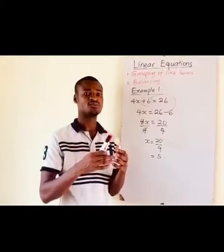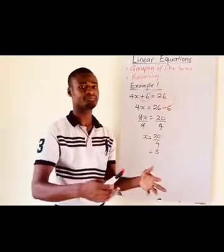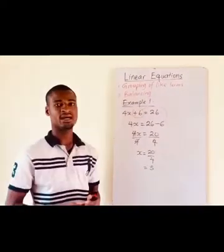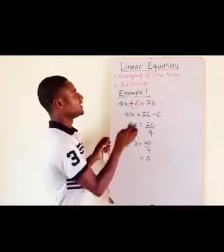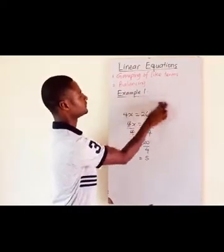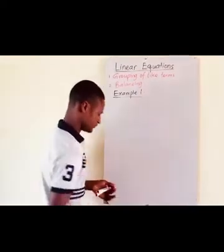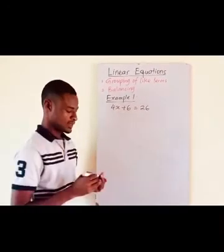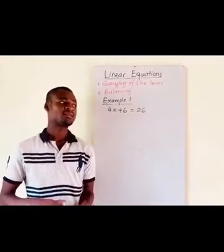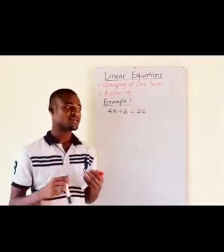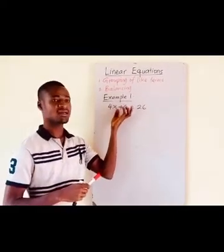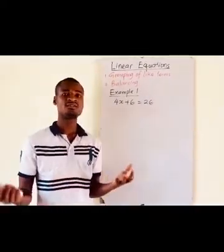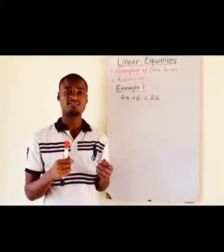Now let's solve the same example using the method of balancing. Using the balancing method, the idea is that once we have positive 6 at the left hand side of the equation and we don't want it to be at that side, we will introduce the opposite term of positive 6, which is negative 6.